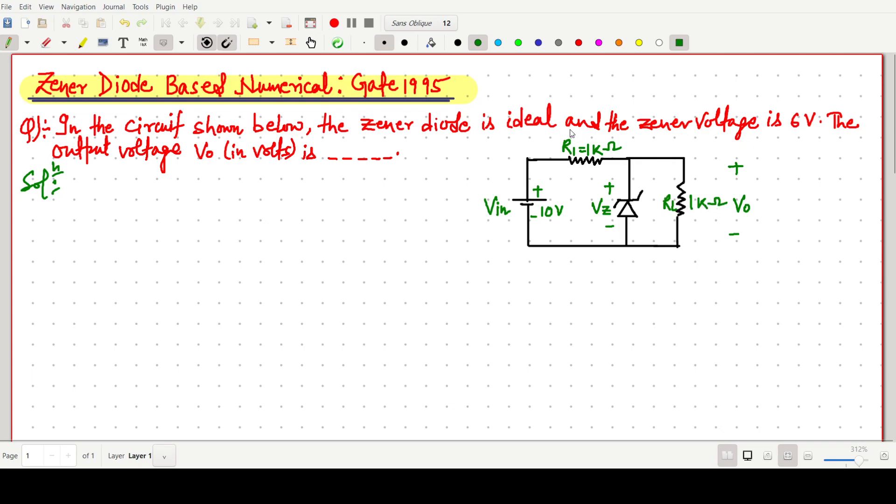But when the Zener diode is off, when the Zener diode is not operational, means the Zener diode is not working, in this case, this one will be open-circuited.